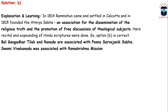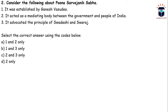The second question asks us to consider the following about Poona Sarvajanik Sabha: first, it was established by Ganesh Vasudeo Joshi; second, it acted as a mediating body between the government and people of India; third, it advocated the principle of Swadeshi and Swaraj. The answer is 1 and 2 only, as it did not advocate radical things like Swadeshi and Swaraj, which emerged in the early 20th century.